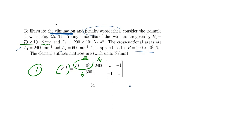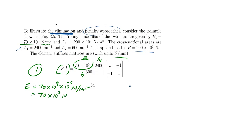You have to convert all values into Newton per millimeter form, since all dimensions are in millimeters. To convert E from N/m² to N/mm², multiply by 10⁻⁶, so E1 = 70 × 10⁹ × 10⁻⁶ = 70 × 10³ N/mm². Similarly, E2 = 200 × 10³ N/mm². Both values have to be substituted here.